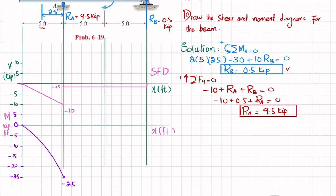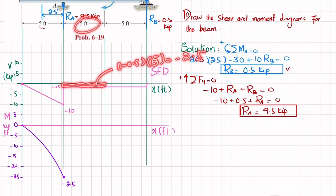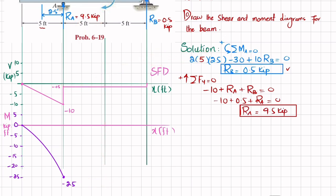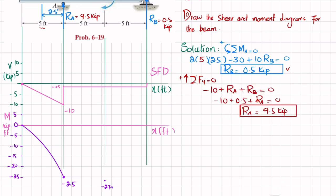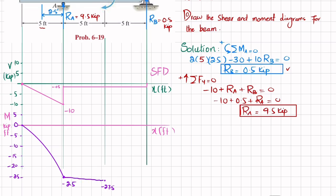The second area under the shear force diagram is a rectangle: minus 0.5 × 5 = minus 2.5. Adding to minus 25 gives minus 27.5. Since the shear force in this region is a horizontal line (zero-degree), the bending moment is a first-degree straight line. The area is negative so the slope is decreasing, and we join these two points with a straight line.